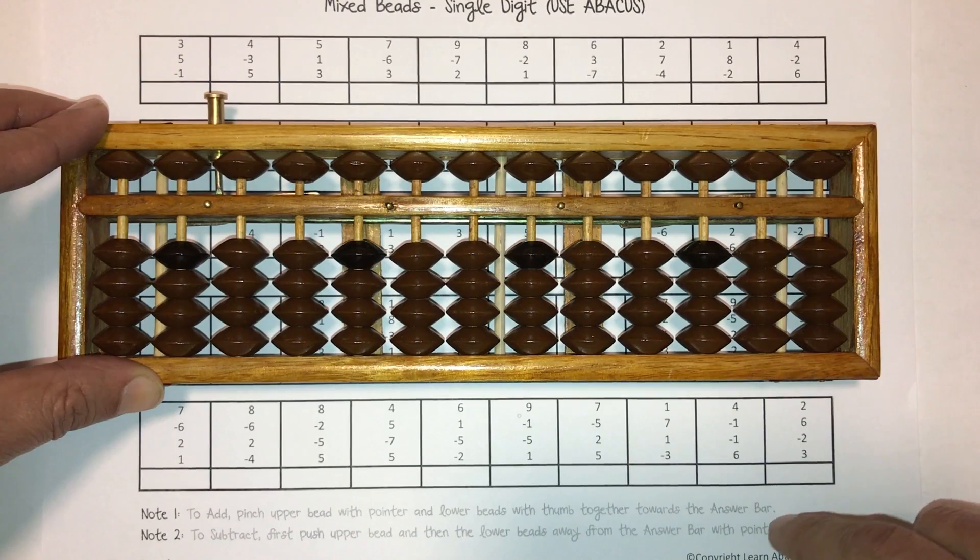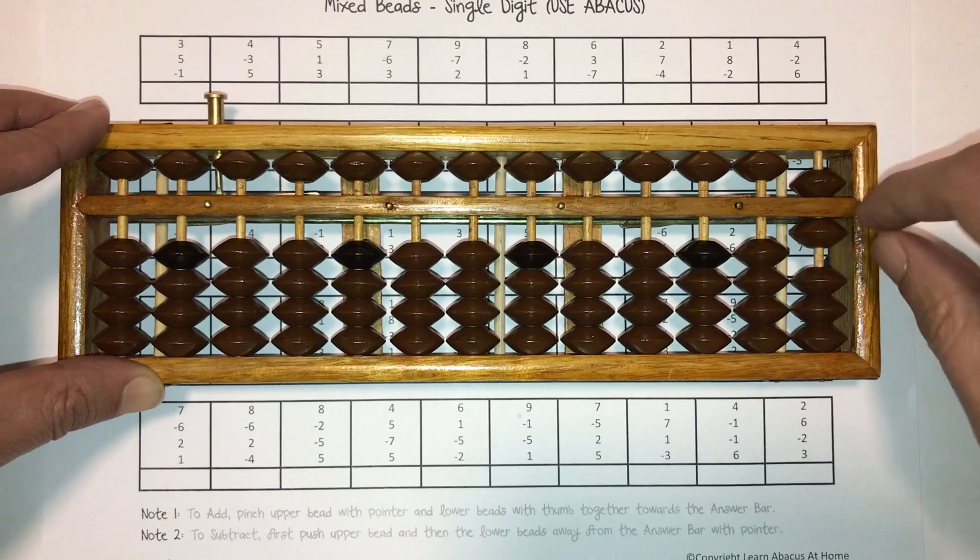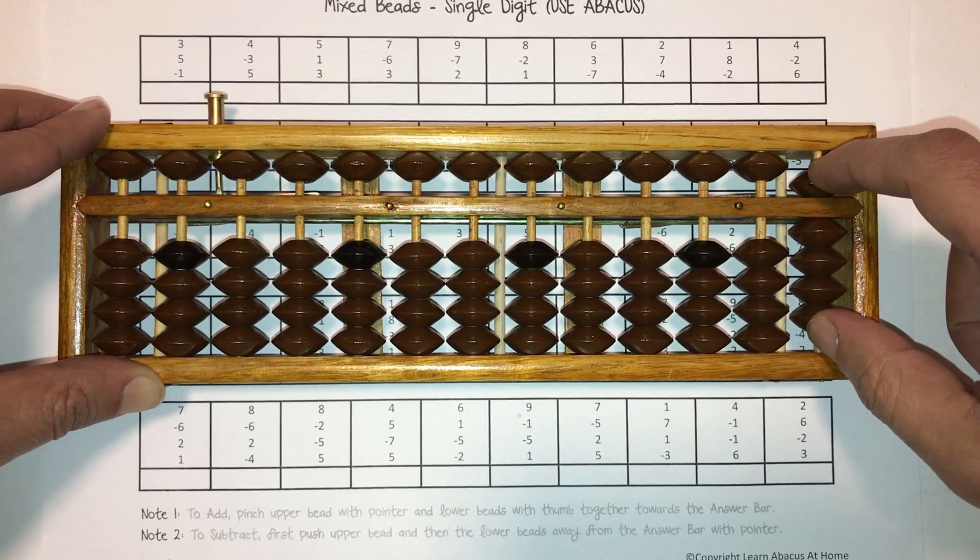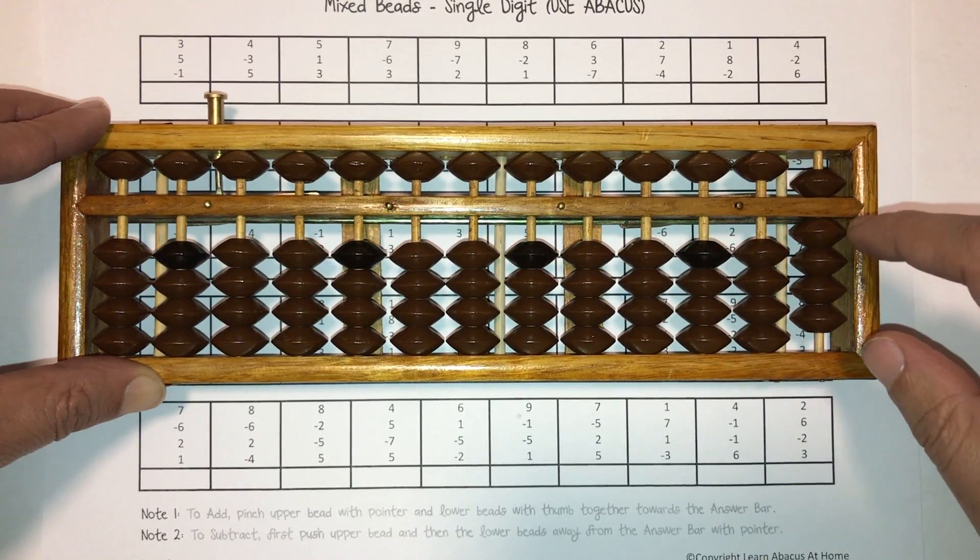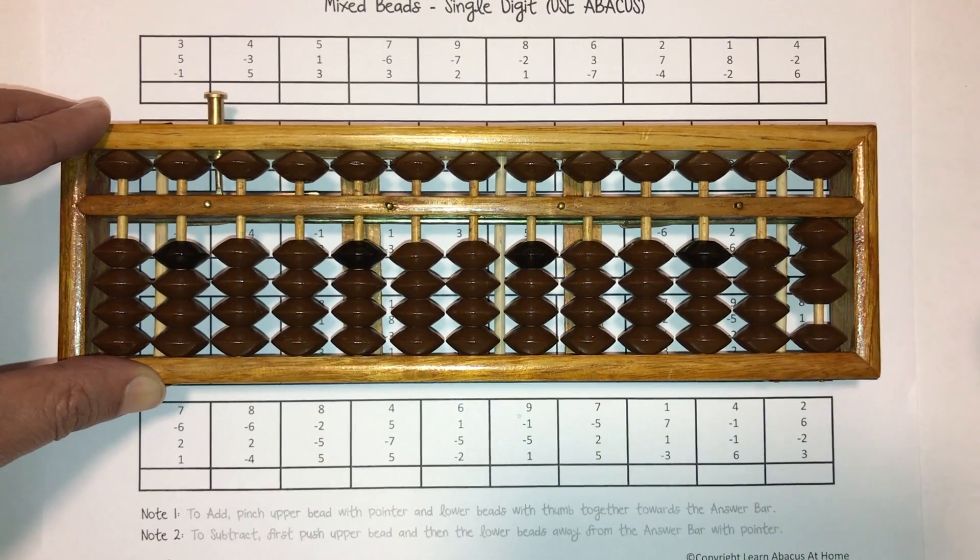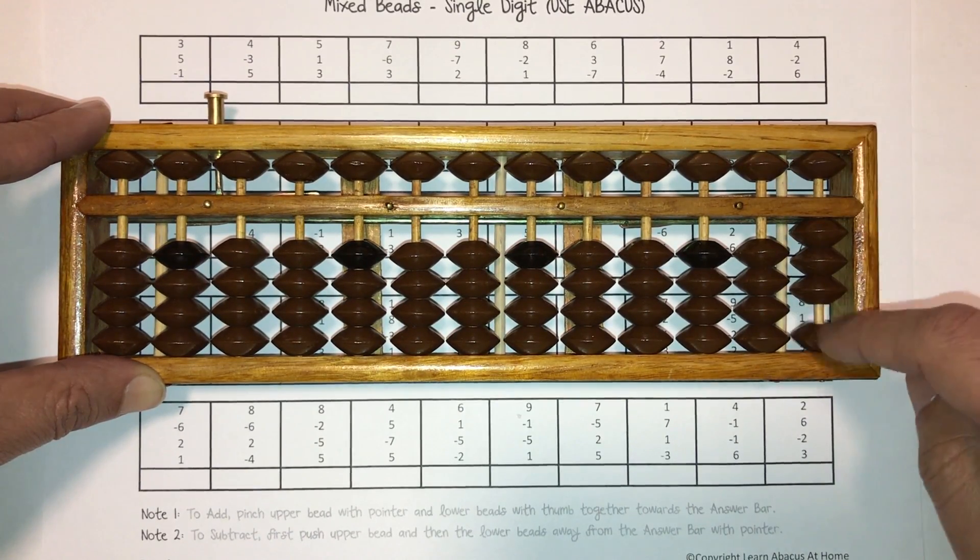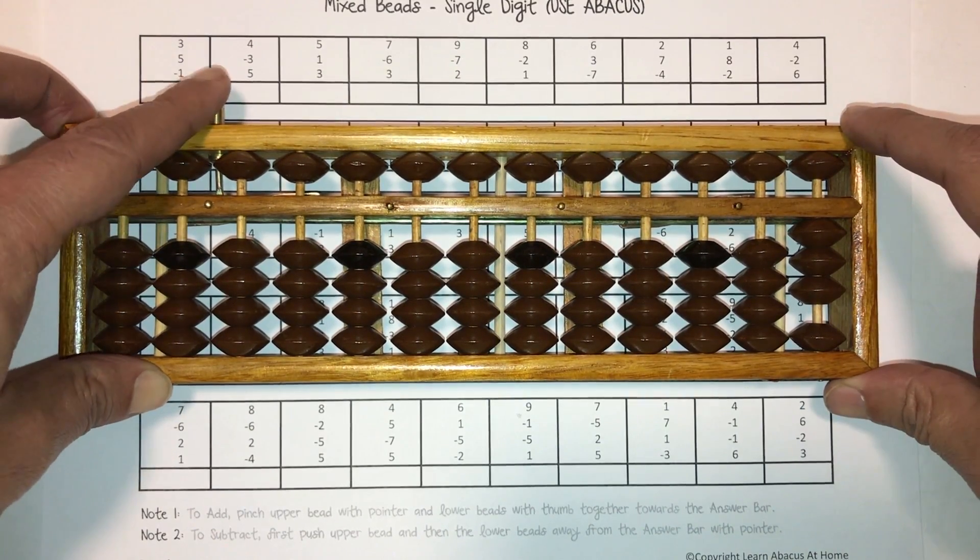Real quick reminders: when we are adding mixed beads like six, seven, eight, and nine, we pinch the numbers together. Like we added nine by pinching the five and the four together to the answer bar. And when we're taking away, let's say minus six, you use your pointer to do the subtraction. Like minus five with the pointer, minus one with the pointer to take away a six, leaves you with a three.